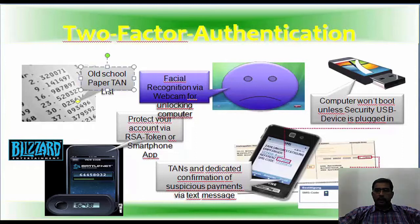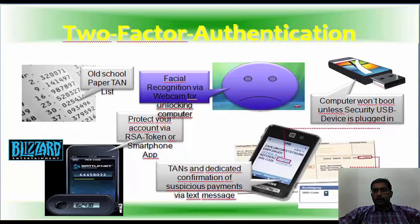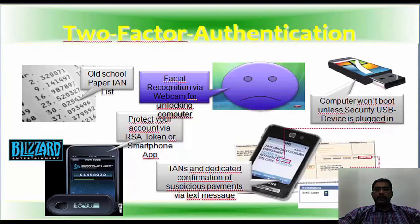Two-factor authentication is a method where in addition to your password you use some other form of authentication. It cannot be two passwords — that becomes multi-level authentication. One factor should be remembered info and the other should be possessed info. Different methods include facial recognition via webcam for unlocking laptops.